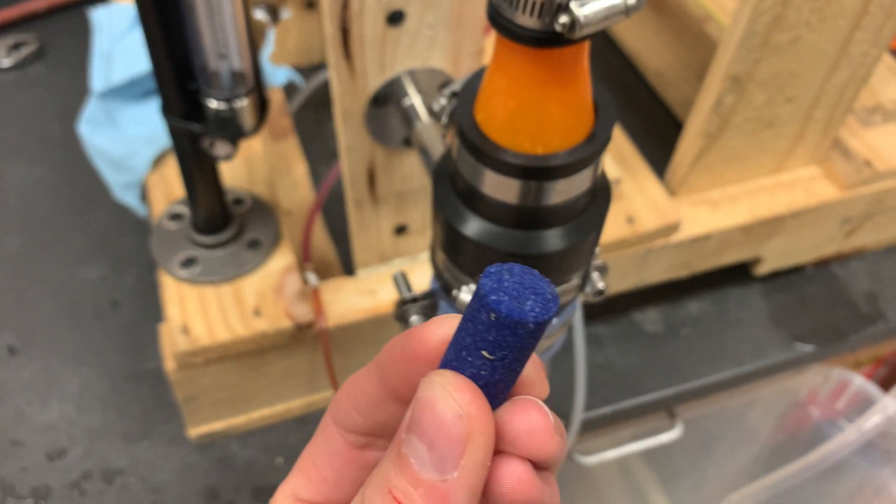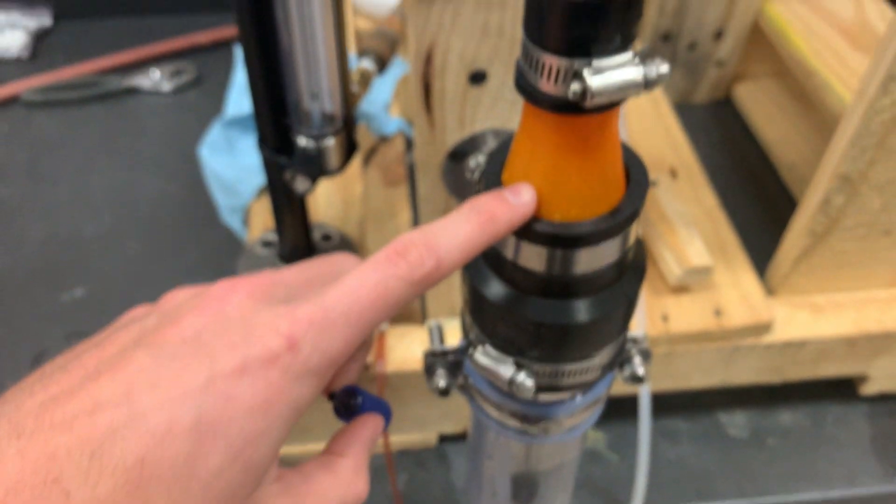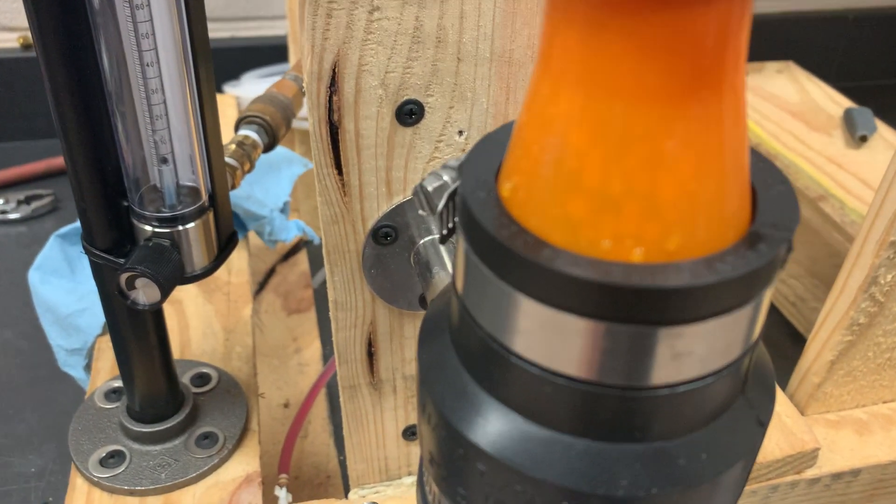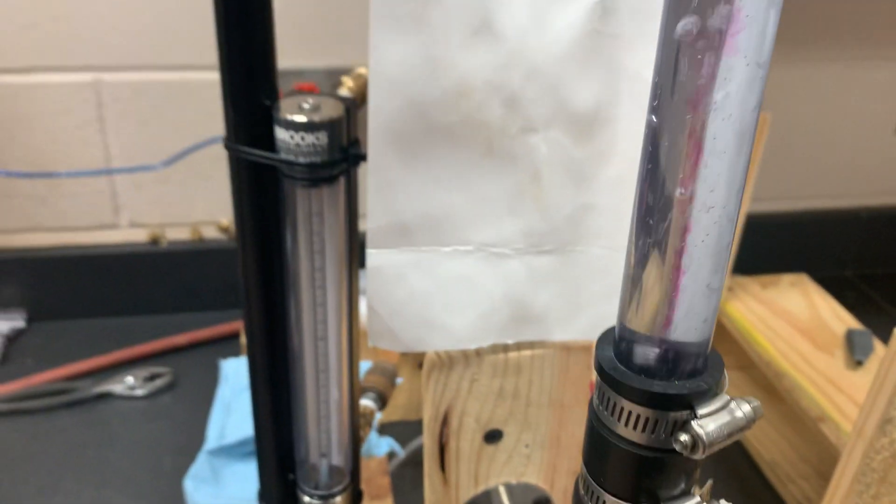The bubbles are small that come out of here, but they get stuck on the cone. Then they grow, accumulate, and break off into big bubbles.